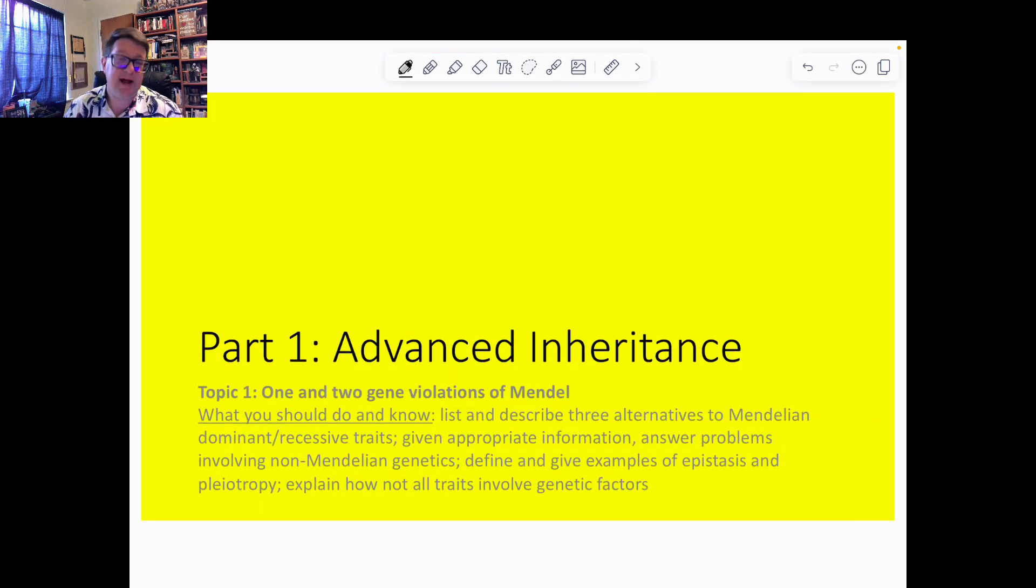This week is going to have five videos. Part one is just going to deal with advanced inheritance, meaning it's not as simple as doing a simple Punnett square. Then part two is going to be some molecular biology. Here we should know that one and two genes can violate Mendel's law. There are three alternatives to Mendel's dominant and recessive traits. You can solve some non-Mendelian genetics and give some examples of epistasis and pleiotropy, and explain how sometimes inheritance isn't always genetic.